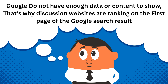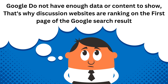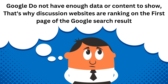Quora, Pinterest, Medium, Reddit — these are all discussion forums. So pick those keywords that have a discussion forum in the search results on the first or second page of Google results.